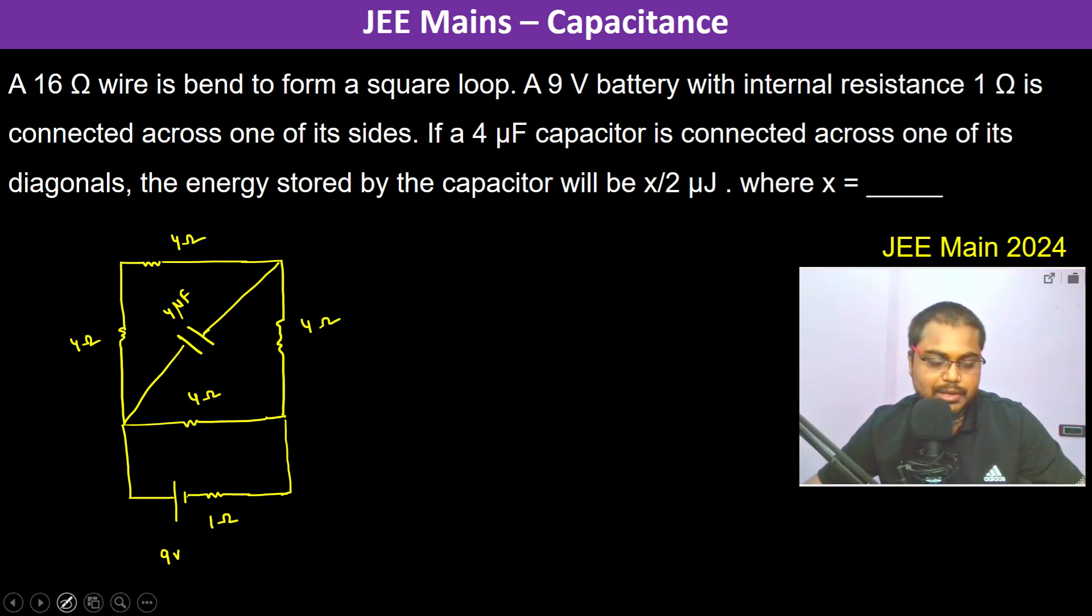The energy stored in the capacitor will be x by 2 microjoules. It is asked that the energy stored in the capacitor - so basically what is the energy stored in the capacitor. The energy stored varies with time, so at different times the energy stored is different.